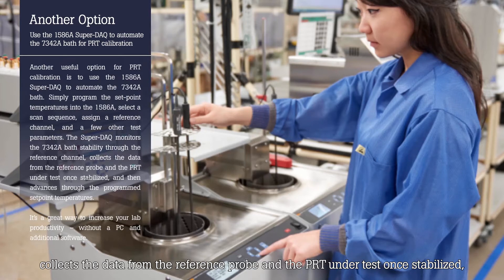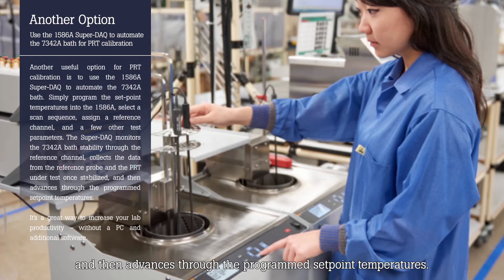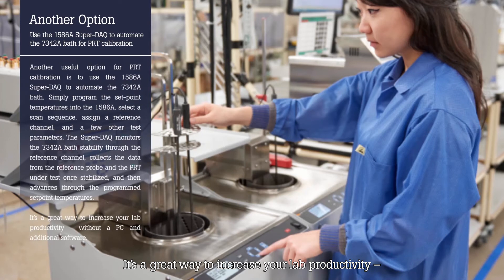The Super-DAC monitors the 7342 bath stability through the reference channel, collects the data from the reference probe and the PRT under test once stabilized, and then advances through the program set point temperatures. It's a great way to increase your lab productivity without a PC and additional software.